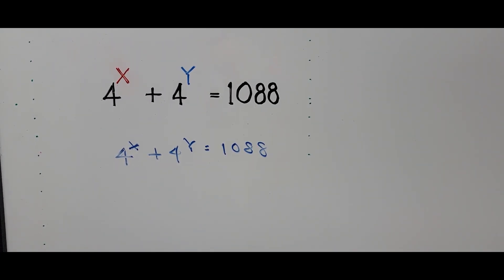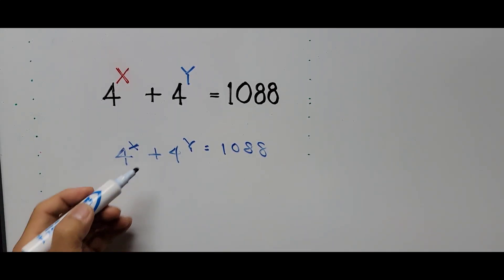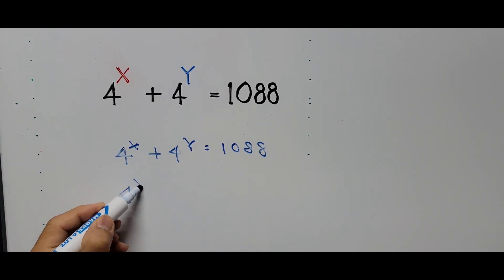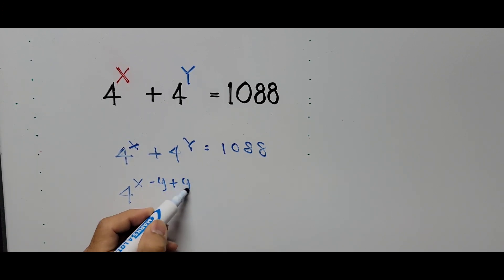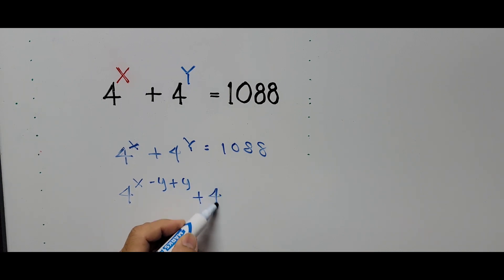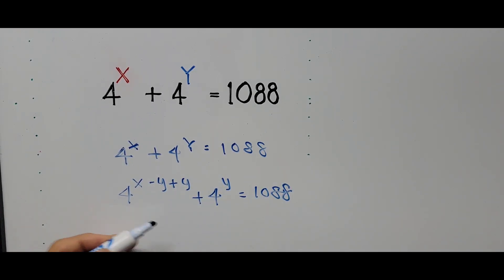Here we express the exponent X with the addition of Y minus Y — that's a little trick. So this becomes 4 raised to the power of (X minus Y) plus Y. Adding Y minus Y to the exponent X won't change its value, giving us 4 raised to the power of (X minus Y plus Y) plus 4 raised to the power of Y equals 1088.